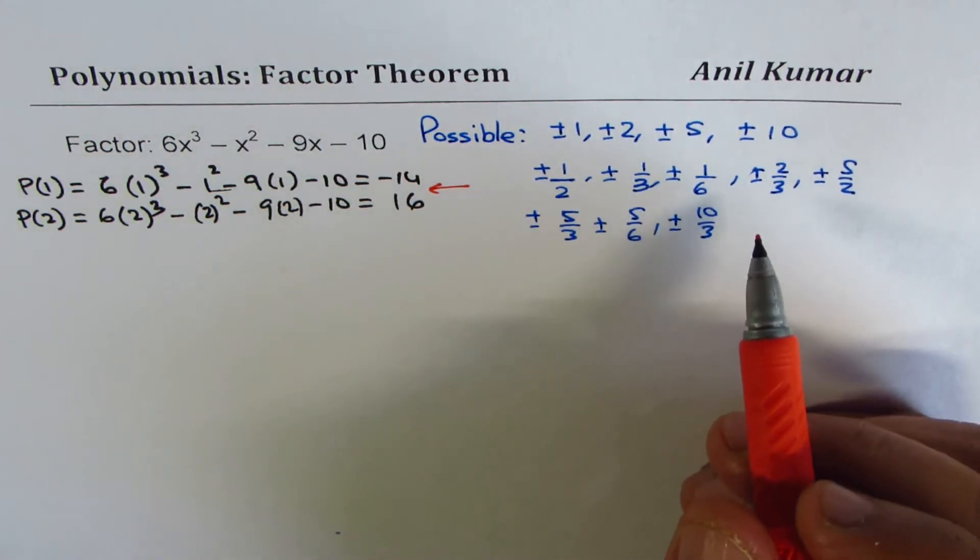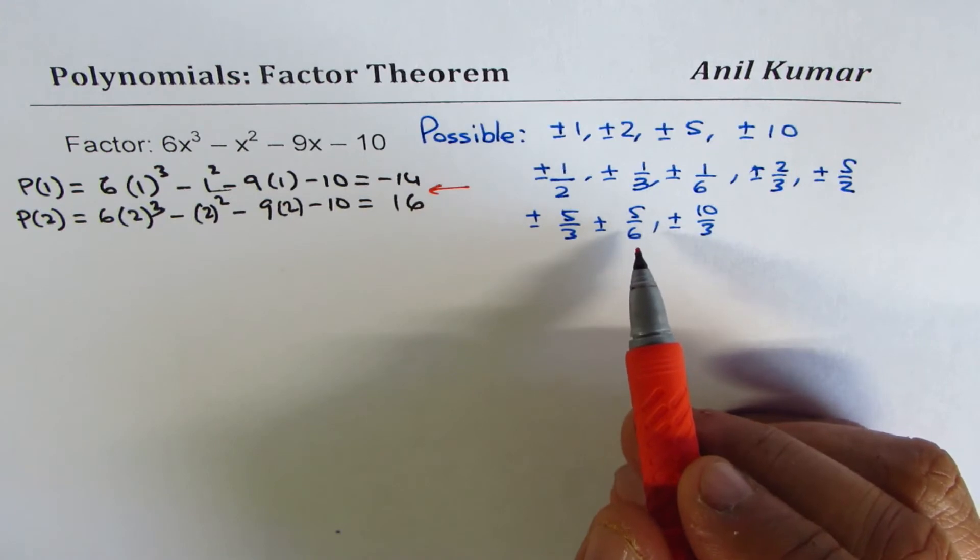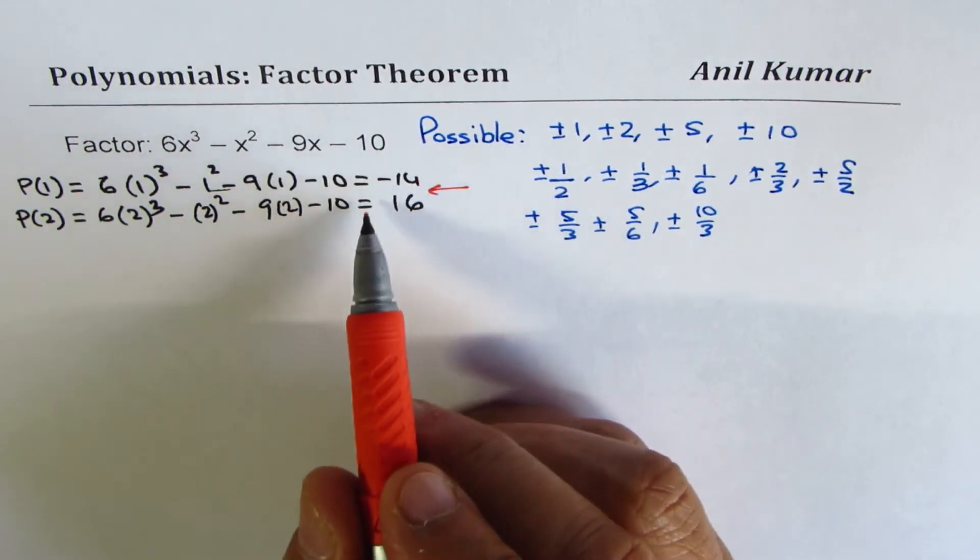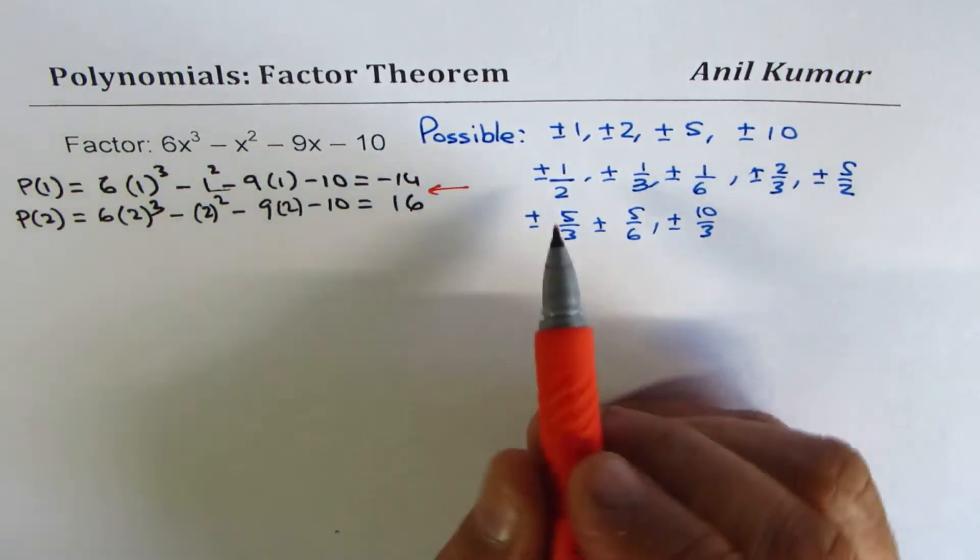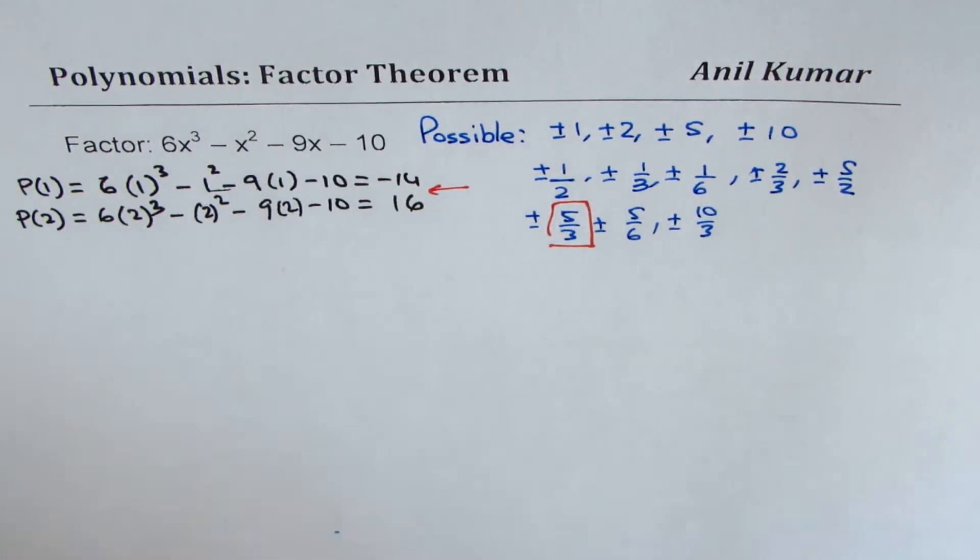So it could be, for example, we could try 5/2, 5/3, 5/6, kind of like this. It seems to be somewhere right in the middle. Let's try these numbers and let me try 5/3.